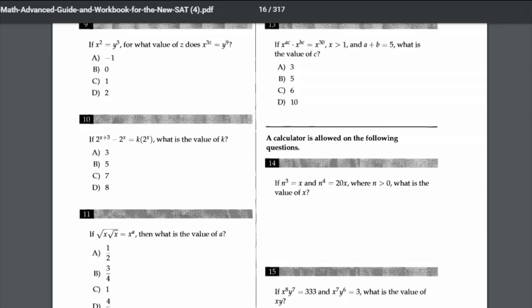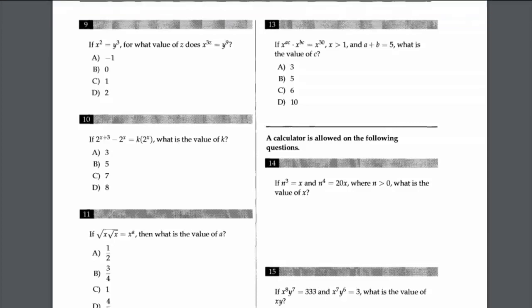Number 10: 2 to the power of (x+3) minus 2 to the power of x equals k times 2 to the power of 2x. What is the value of k? We take 2^x as a common factor: 2^x times (2³ minus 1). Since 2³ = 8, we get 8 minus 1 equals 7, so k equals 7.